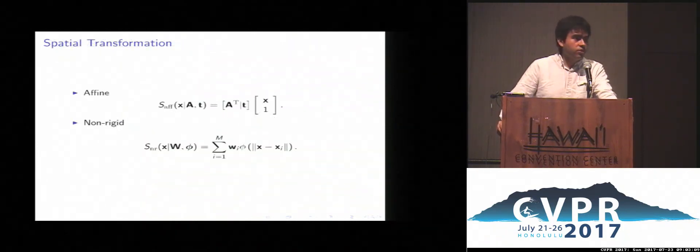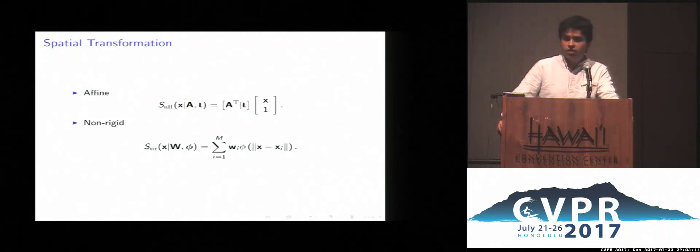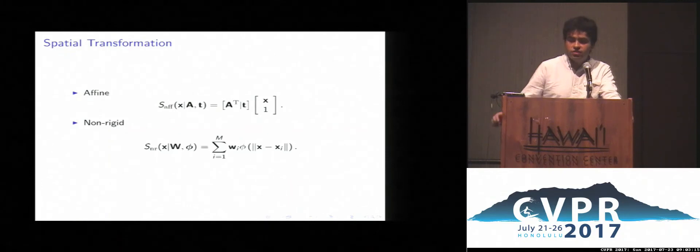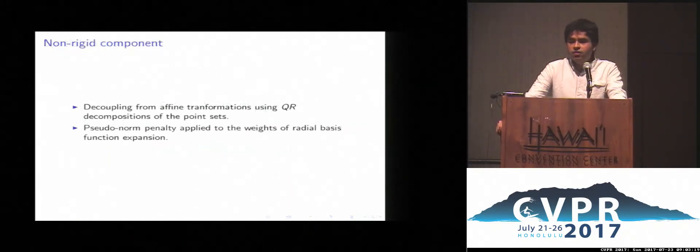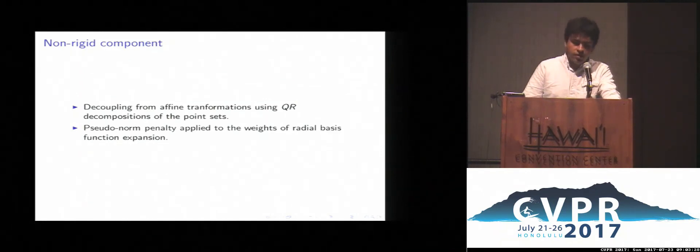The transformation that we use is a combination of an affine and a non-rigid component. The non-rigid component uses radial basis function expansion, and then we decouple the affine and the non-rigid transformations using QR decomposition, and we apply a norm penalty on the weights of the non-rigid transformation to make the function robust to local perturbation.